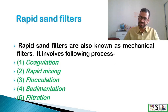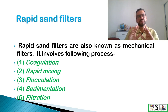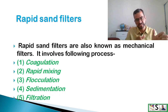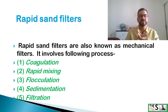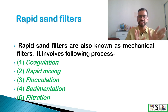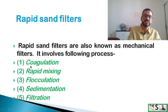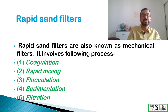Rapid sand filters are also known as mechanical filters. The process of filtration is faster than in slow sand filters because more processes are included. Before reaching the filter bed, the water is treated through: coagulation, rapid mixing, flocculation, sedimentation, and then filtration.